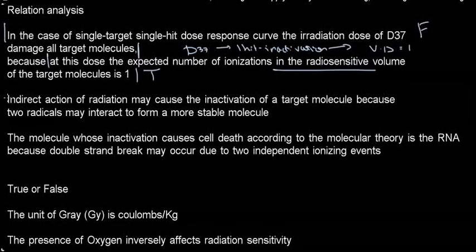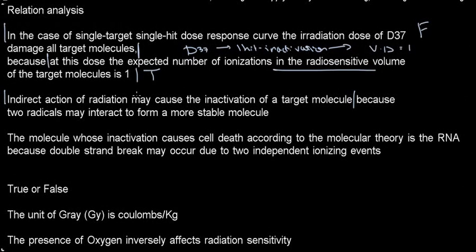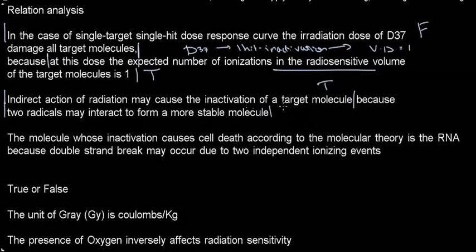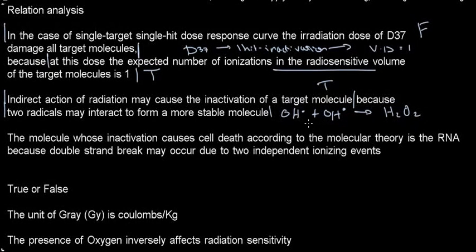Next statement: indirect action of radiation may cause the inactivation of a target molecule. We discussed this — indirect action is associated with inactivating a target molecule using solvent molecules around it, so this is the definition — true. Two radicals may interact to form a more stable molecule. Two OH radicals, which are the most reactive radicals, can form hydrogen peroxide — a more stable molecule than the individuals. So this is also true.